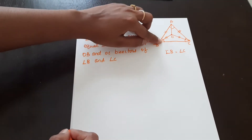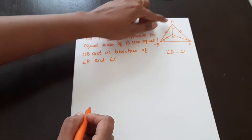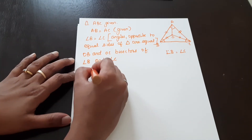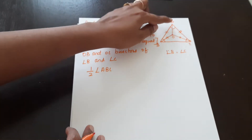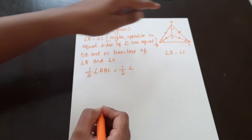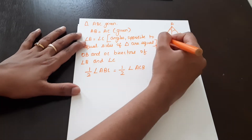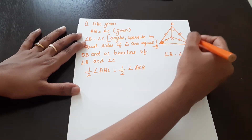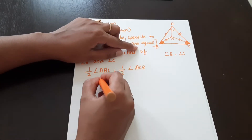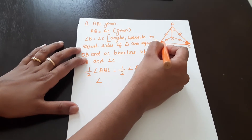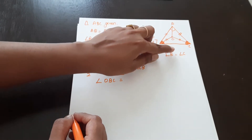So angle OBC is equal to angle OCB. Since OB and OC bisect angle B and angle C respectively, and angle B equals angle C, we have angle OBC equal to angle OCB.